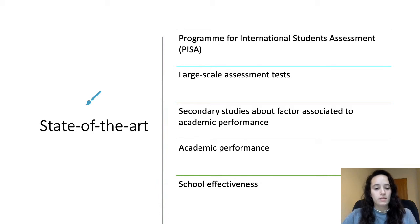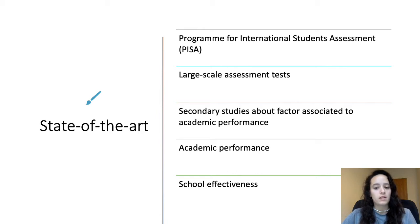Academic performance is understood as the results obtained by students in the different assessment tests considering different factors related to the students and their context, and school effectiveness is the set of good practices carried out by the schools to achieve a higher academic performance than expected regarding their contextual characteristics.